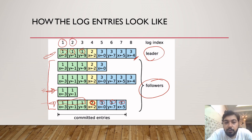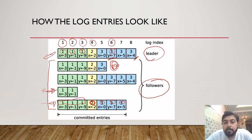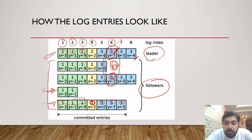Each log also has an index. So for index 6 in the leader, it belongs to term 3 with a certain value. In a follower, there may be no log for index 6 in term 3. This is how logs work — with metadata you can actually map each log. There is also a special property: if for two nodes a particular index and term match, then for all preceding logs the index and term will also match.